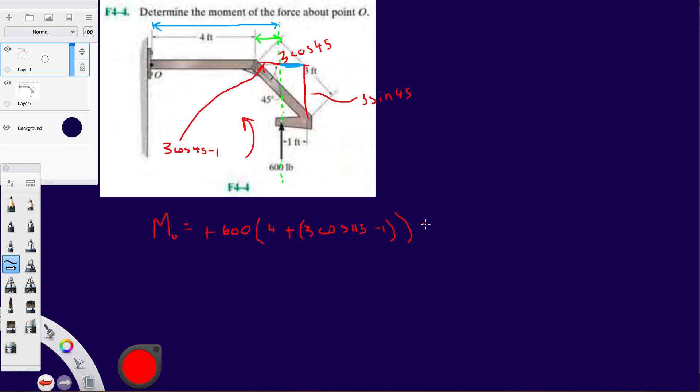So let's see what this gives us. It's going to be 3 times cosine 45 minus 1 plus 4, times 600, and that is 3,073 pound-foot.